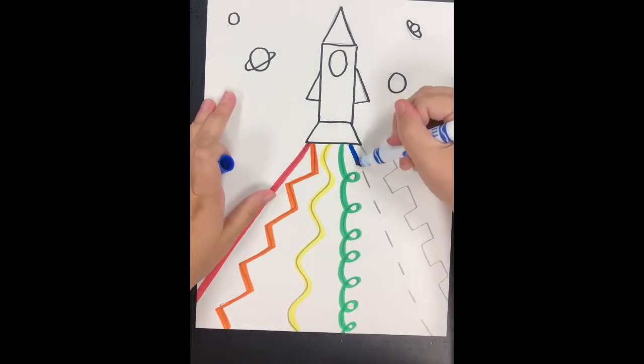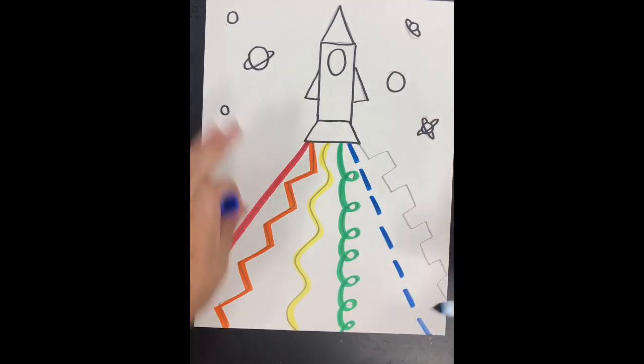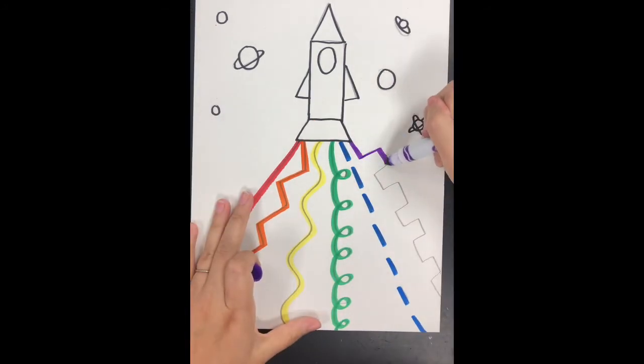My dashed line is going to be blue, and I'm still just going on top of my pencil. I don't want to fall off. I'm going very slowly to go over my castle line with my purple.